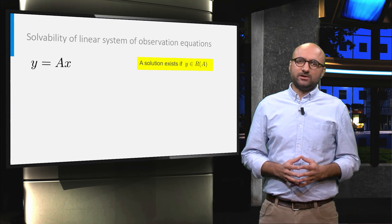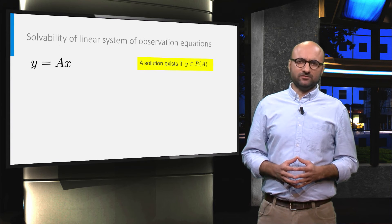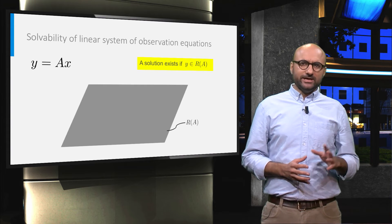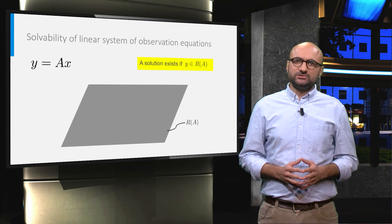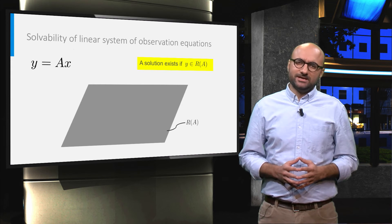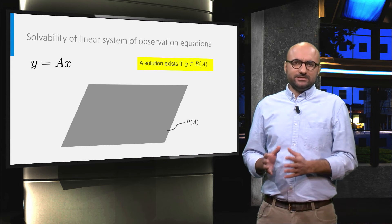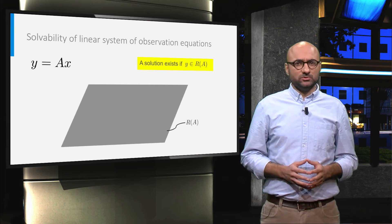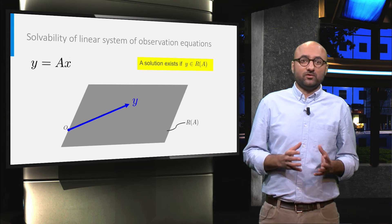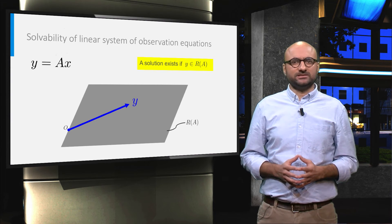This fact can be conceptually visualized as the following. If the gray area in this plot shows the range space of A, the system of y equals Ax has a solution only if the vector y belongs to the range space of A.